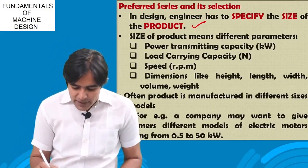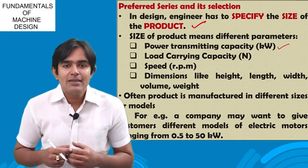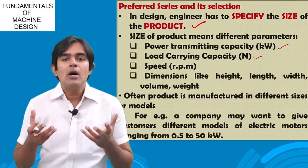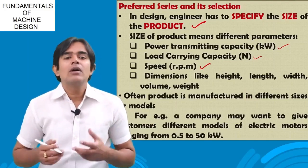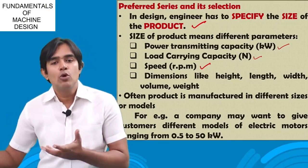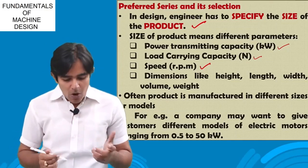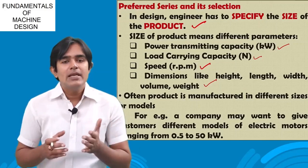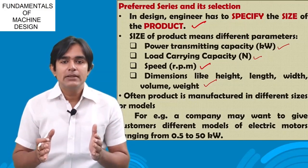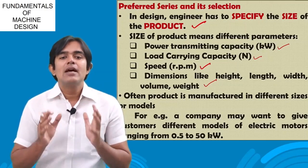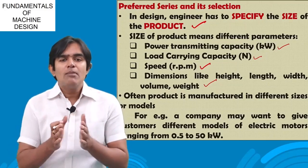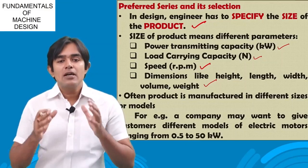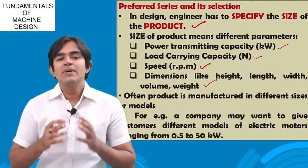The size of the product can mean a motor of a particular kilowatt capacity, a crane or equipment of a particular load in Newtons, a bike or car with a certain speed, an electric motor rotating at a certain RPM, or any product having a certain height, length, weight, or breadth. If I want a parameter in a particular size, I should go for the preferred series. Too many sizes will confuse and will not be usable, so only the exact sizes usable by the customer should be selected.